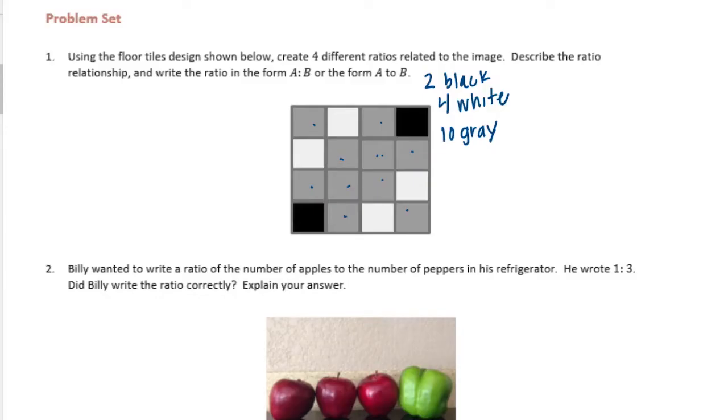So we can just start. Let's first do the black to white. So we could say the ratio of black squares to white squares. And that would be, black to white would be two to four. So there's one.